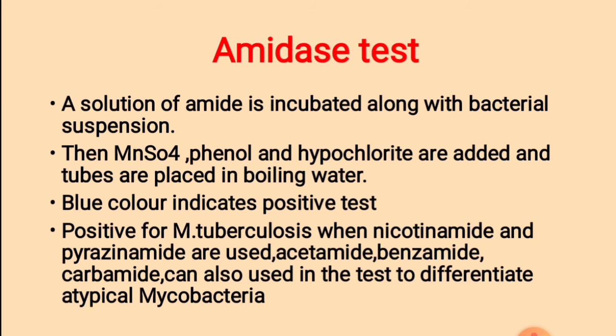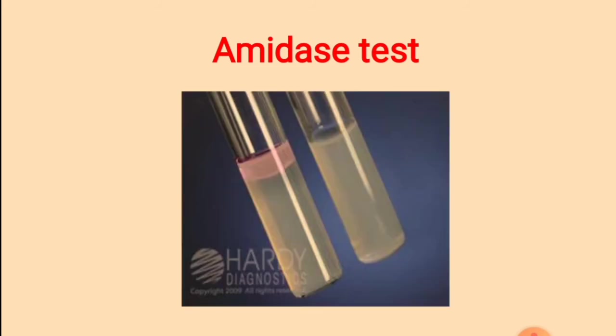Amidase test: a solution of amide is incubated with bacterial suspension, then manganese sulfate, phenol, and hypochlorite are added and tubes are placed in a boiling water bath. Blue color indicates a positive test. This test is positive for Mycobacterium tuberculosis when nicotinamide and pyrazinamide are used; acetamide, benzamide, and carbamide can also be used to differentiate atypical mycobacteria.